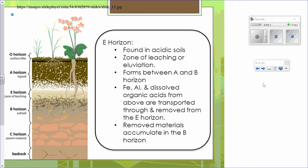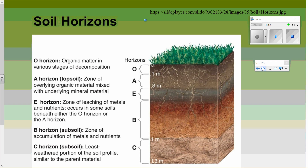Be mindful when asked to put horizons in order. One scenario is O, then A, B, and C. Another scenario includes the E horizon: O, A, E, B, and C. The E horizon is the zone of leaching of metals and nutrients and occurs in some soils beneath either the O horizon or the A horizon.